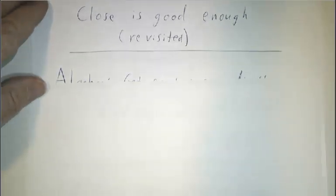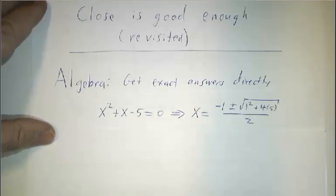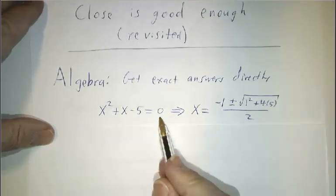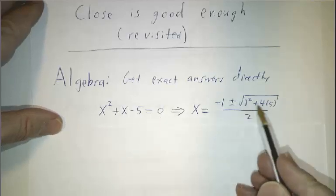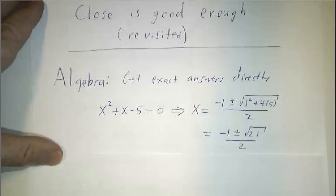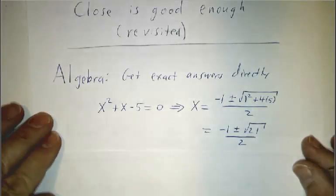When you're doing algebra, you tend to get your answers directly. Say, if you wanted to solve a quadratic equation, x squared plus x minus 5 equals 0, you take minus b plus or minus b squared minus 4ac divided by 2a, and boom, you got the answer. x is negative 1 plus or minus root 21 over 2. That's not an approximate answer. That's an exact answer.